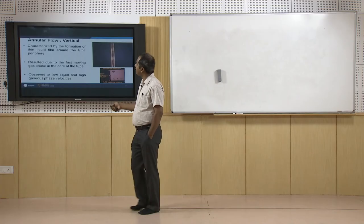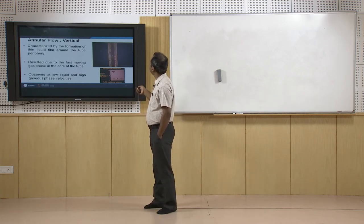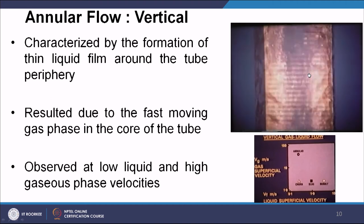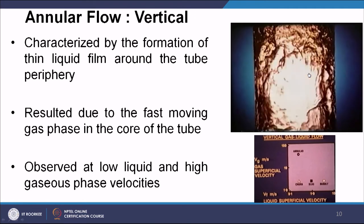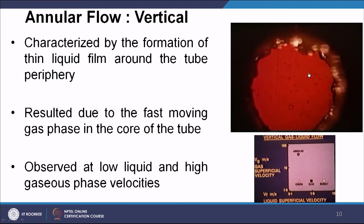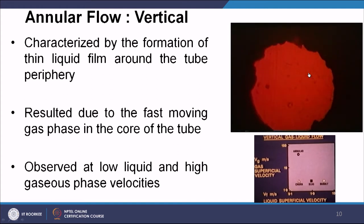Annular flow in a vertical channel is characterized by the formation of a liquid film around the tube with gas at the core. This results from fast-moving gas phase. In the cross section, you can see the liquid film around the periphery and gas-only phase at the center. Annular flow is observed at low liquid and high gaseous superficial velocities — from churn flow, keeping the liquid flow rate the same and increasing the gas flow rate leads to this regime.